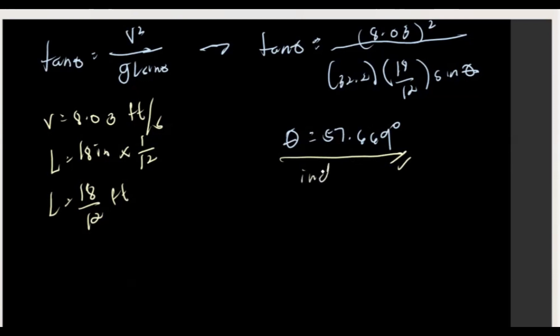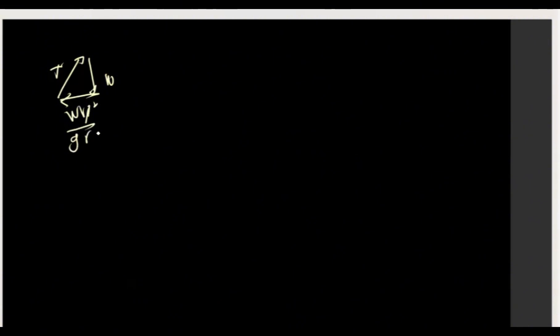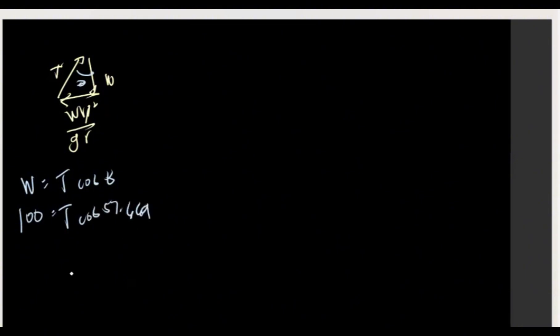For the tension: from the force triangle, weight equals T cosine theta. So 100 equals T cosine 57.669°. The tension T equals 186.982 pounds. This is our answer for the tension in the cord.